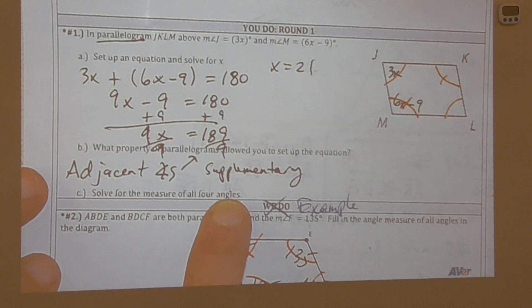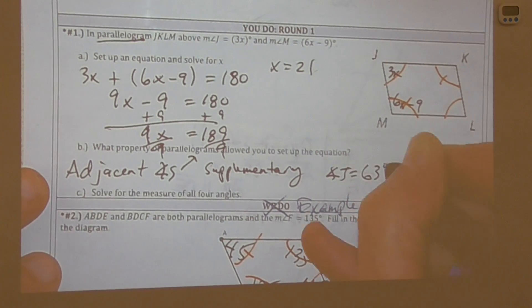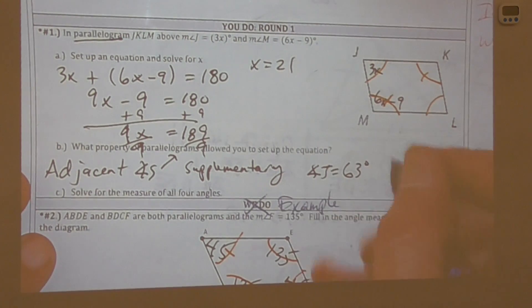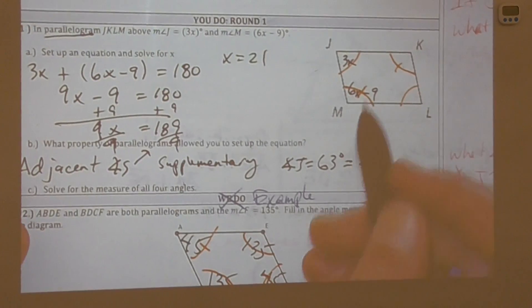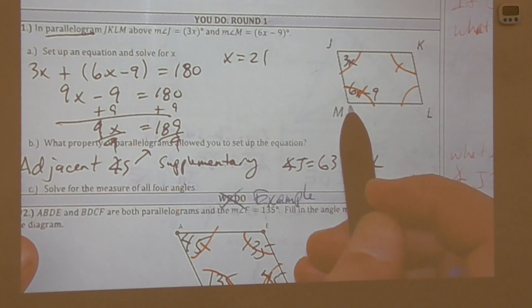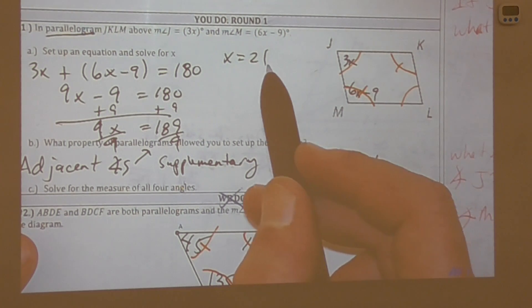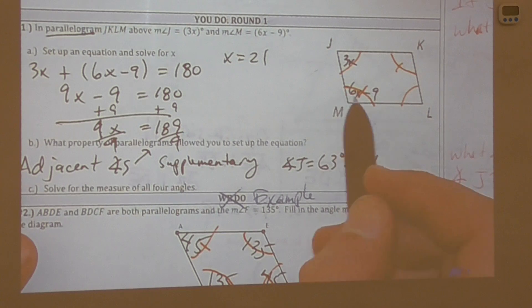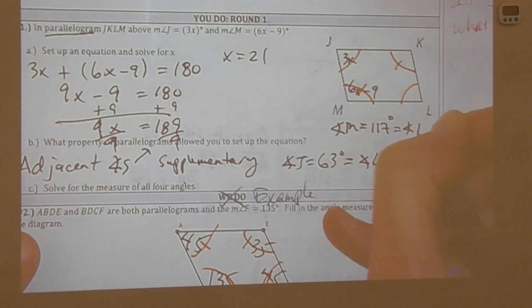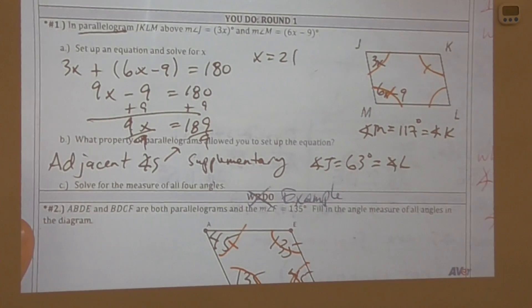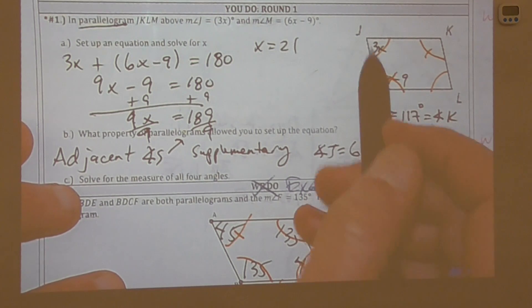Solving for all four angles: angle J is 3 times 21, which is 63 degrees. Angle L equals angle J, so angle L is also 63 degrees. Angle J and angle M must add to 180, so angle M is 117 degrees. Substituting x = 21 into 6x minus 9 gives 126 minus 9, which is 117. So angle M equals 117 degrees, and angle K equals 117 degrees as well.